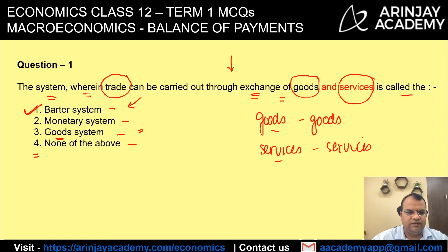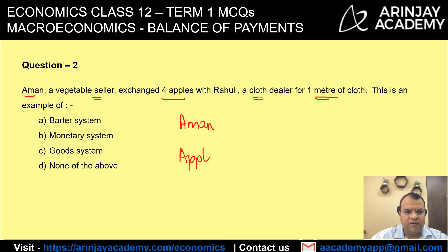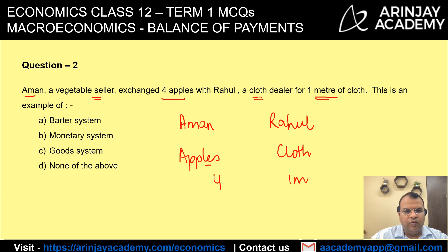Looking at the second question: Amman, a vegetable seller, exchanged four apples with Rahul, a cloth dealer, for one meter of cloth. So Amman had apples and Rahul had cloth. Amman exchanged four apples for one meter of cloth. Both apples and cloth are goods.